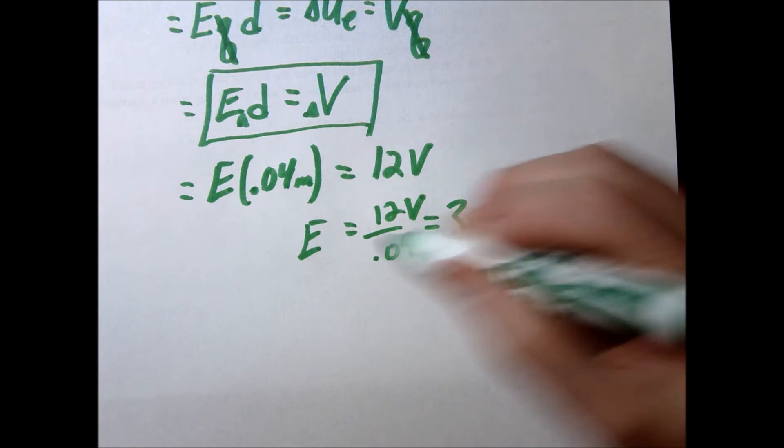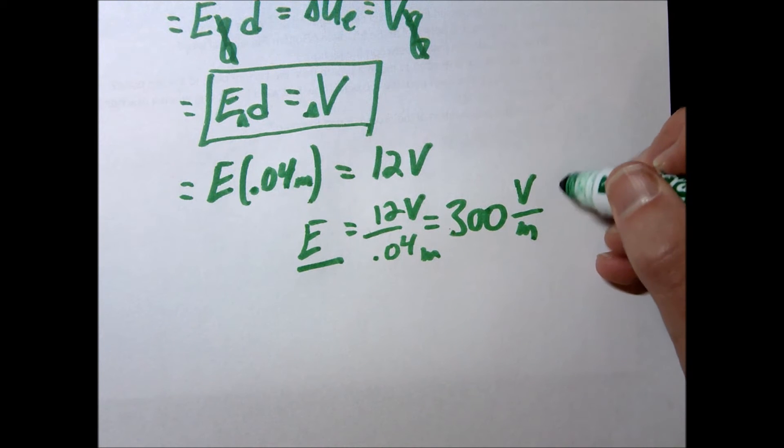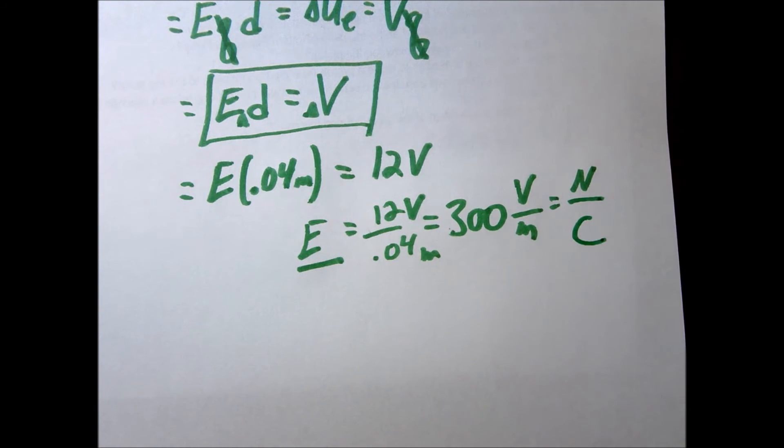So we have 300 volts per meter. If you recall back from when we talked about electric fields, we usually use the newtons per coulomb. Well, these are the same. If you were to break it down into their bare bones, you would see that those are actually the same exact units.